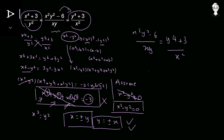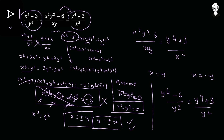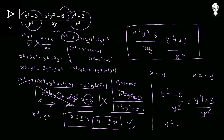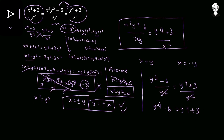We have two cases: x equals positive y or x equals negative y. For the first case, substituting x equals positive y gives y⁴ minus 6 upon y² equals y⁴ plus 3 upon y². Canceling y⁴ from both sides gives negative 6 equals positive 3, which is a contradiction. So x equals positive y yields no solution.